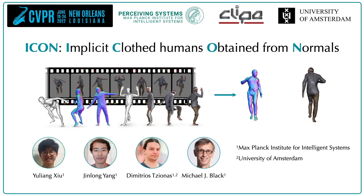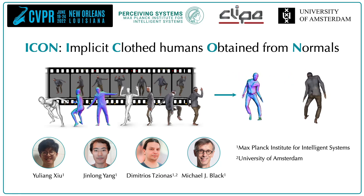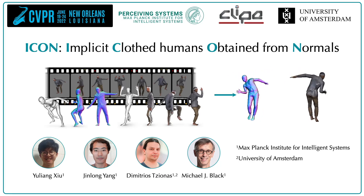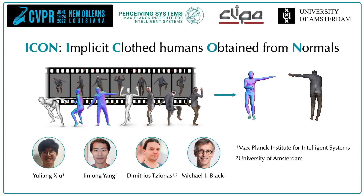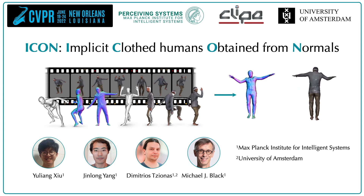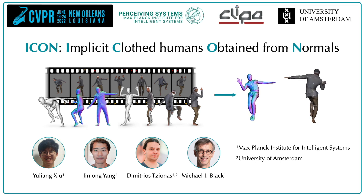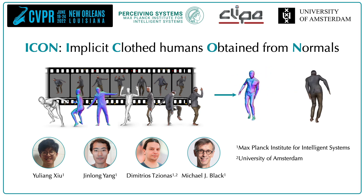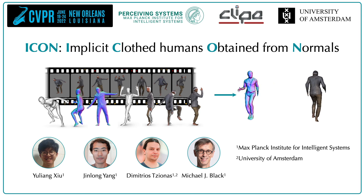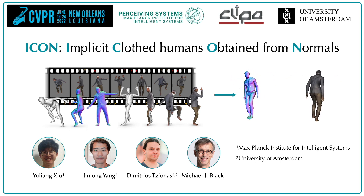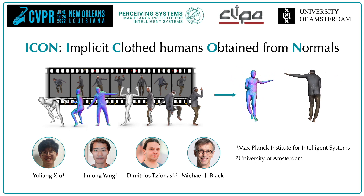We present ICON: Implicit Clothed Humans Obtained from Normals. ICON robustly reconstructs 3D clothed humans in unconstrained poses from in-the-wild images. This enables the creation of an animatable avatar directly from a monocular video, with pose-dependent cloth deformation and full texture.